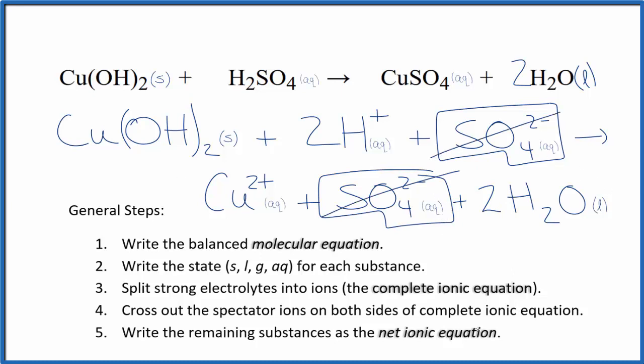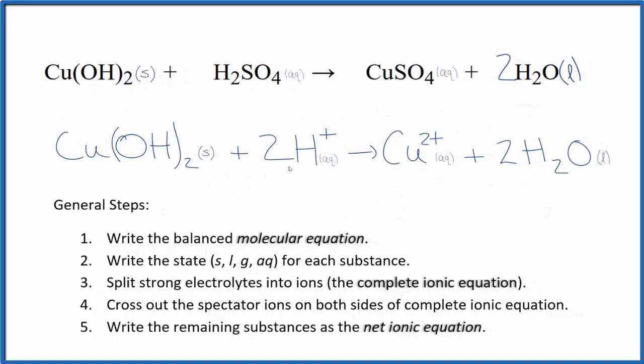So this is the net ionic equation for copper 2 hydroxide plus sulfuric acid. Let's remove the spectator ions, and this is our balanced net ionic equation. Note that the atoms, they're all the same on both sides. The atoms are balanced and the charge is balanced. We have 2 times 1 plus here in the reactants, that's 2 plus, and there's a 2 plus in the product. So charge is the same on both sides as well.